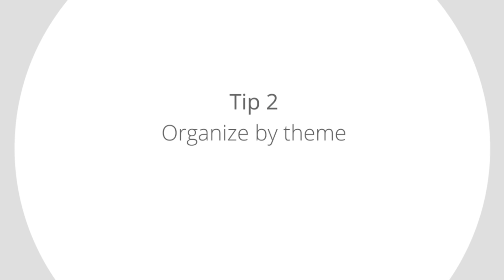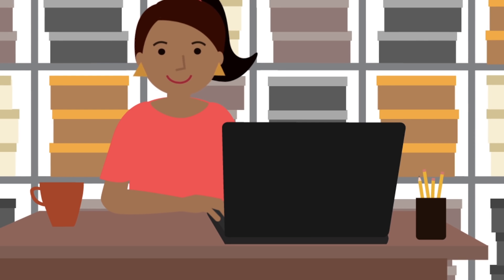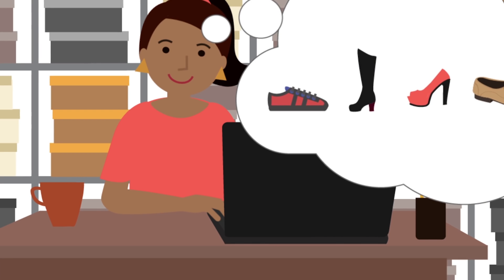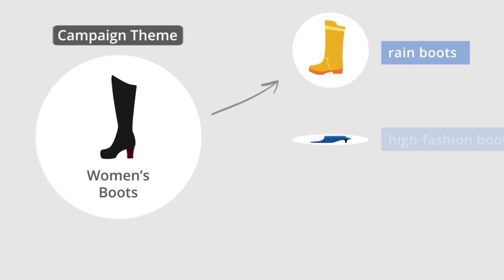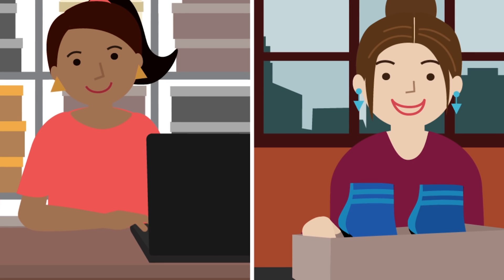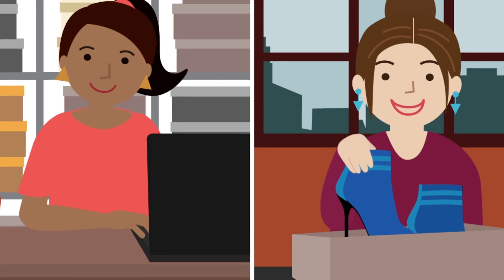Tip 2: Organize by theme. Mary learned to group her ads by themes. She creates different themes for the different types of shoes she sells. For example, she creates an ad campaign around the broad theme of women's boots, then creates different ads and keywords for rain boots, high fashion boots, and booties. By doing this, Mary reaches the right customers and keeps her account organized.